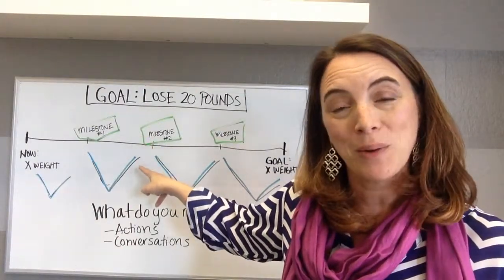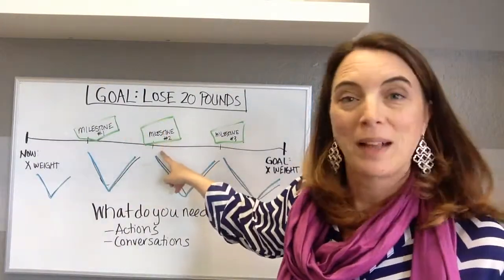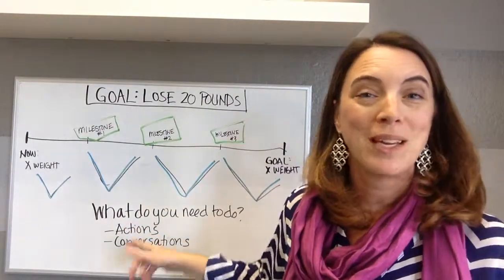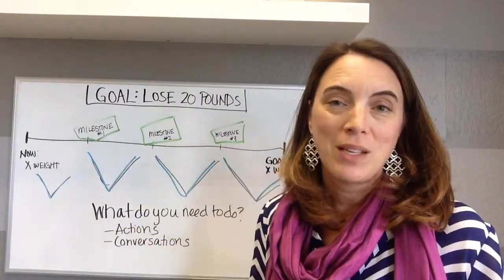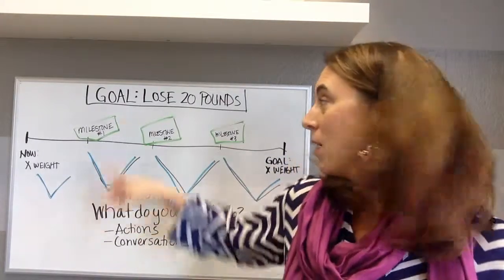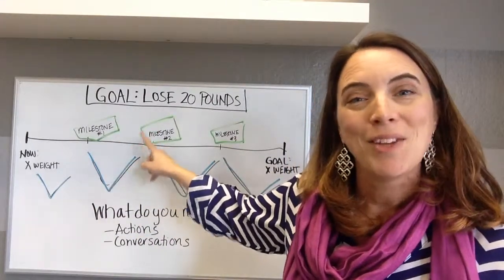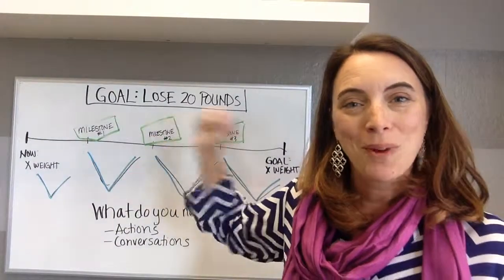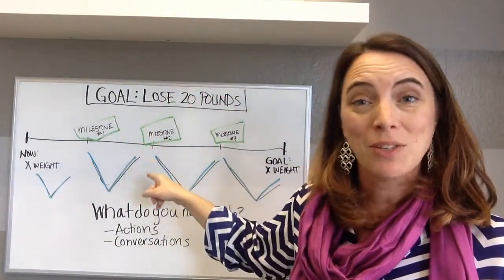Let's say the second milestone is to lose five more pounds. You go through the same process — what actions do you need to take, what conversations do you need to have? Give yourself a deadline, check back in, and if you meet that milestone, celebrate. If not, readjust and go back.